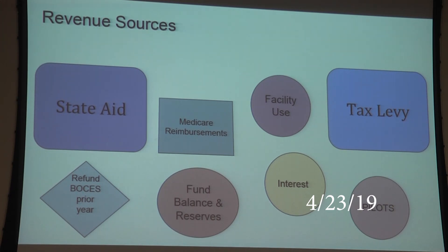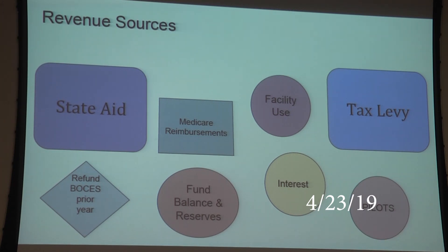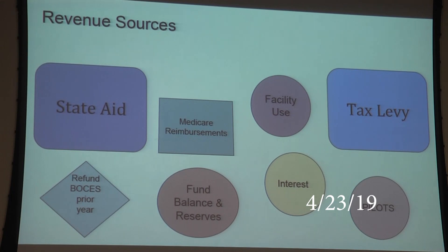Facility use is another revenue source. If a for-profit organization wants to use our facilities, we charge them. Not-for-profits, like the City of Beacon for Beacon Rec's after-school program, can use our buildings at no cost, but they must provide proof of non-profit status and a certificate of insurance. It's not a significant revenue source but it contributes to the miscellaneous portion of the budget.